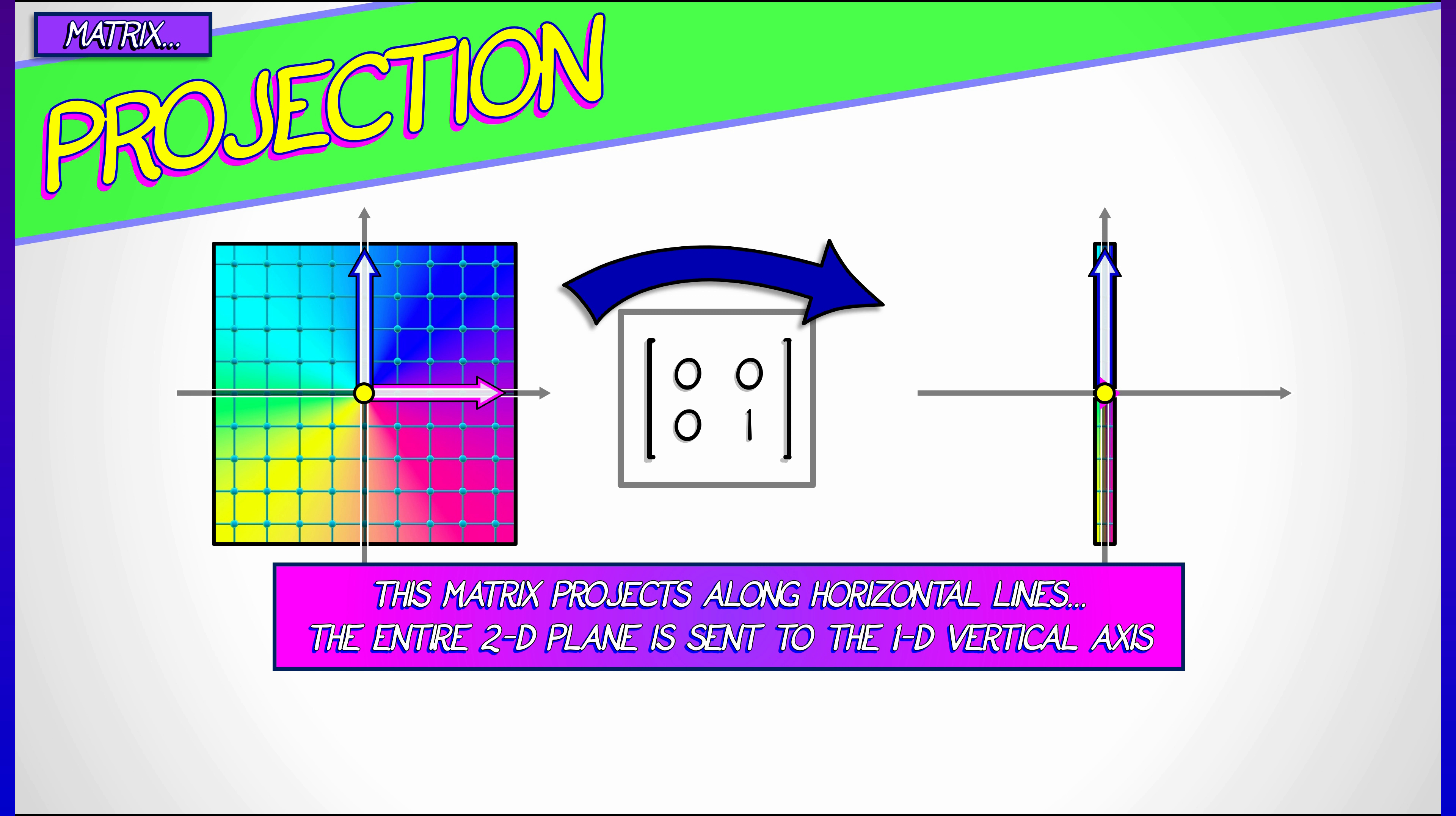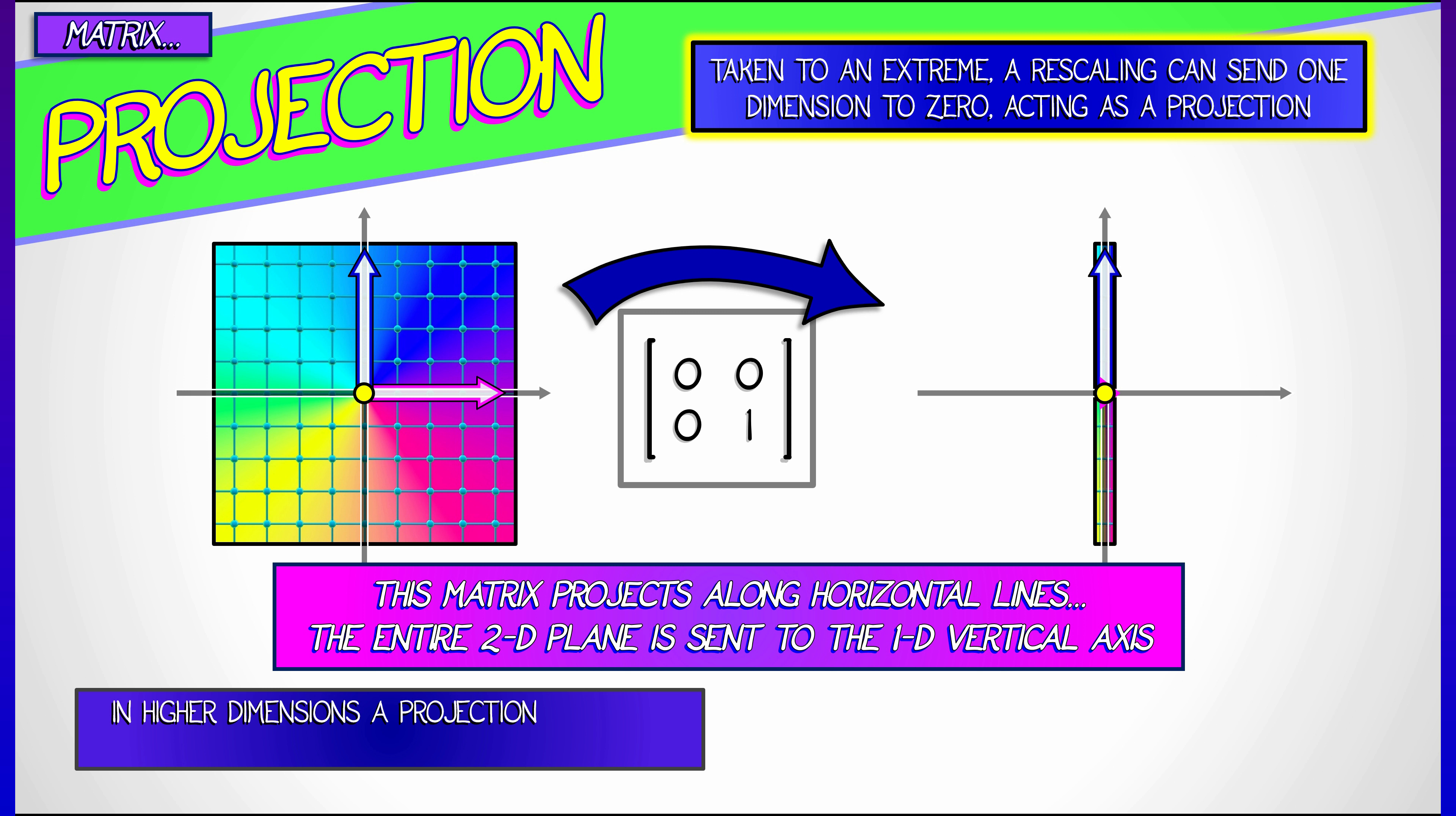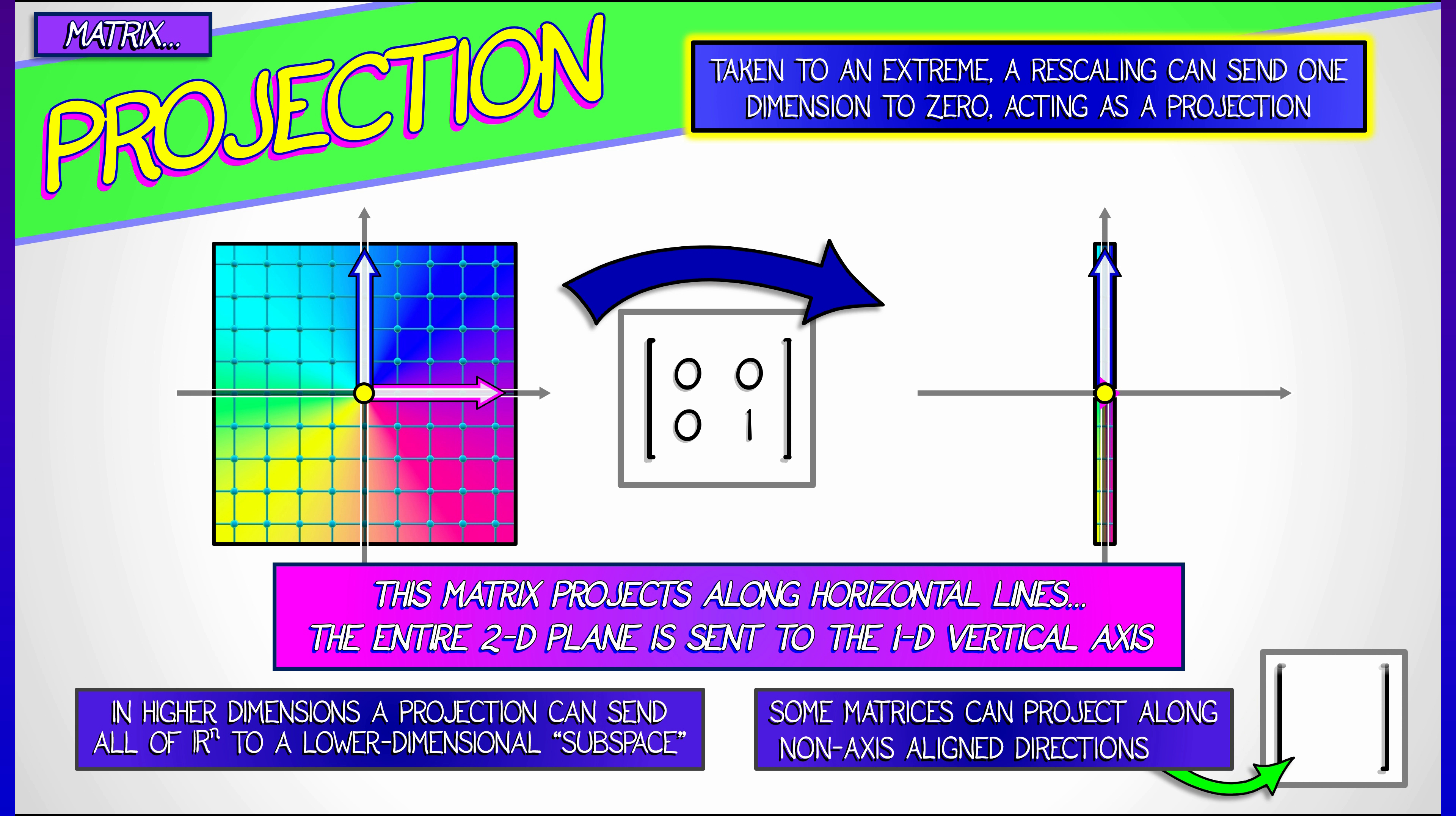It kills the horizontal components of everything in the plane. This projection matrix collapses the entire plane along horizontal lines to the vertical axis, which it leaves invariant, as you can see. Now, lots of interesting stuff here. In higher dimensions, these projections can be really interesting. You can project onto things other than just the x-axis or the y-axis. But these are really just extreme examples of rescalings.